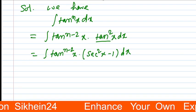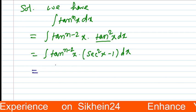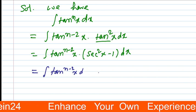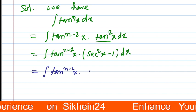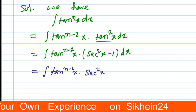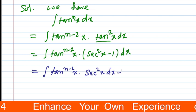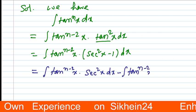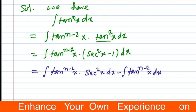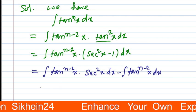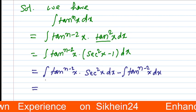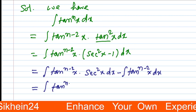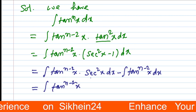We write for it integration tan to the power n minus 2 x into sec square x dx minus integration tan to the power n minus 2 x dx.